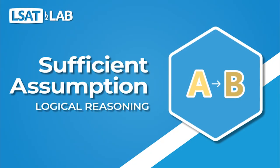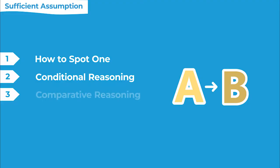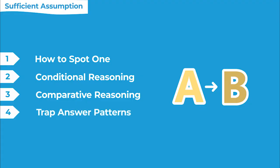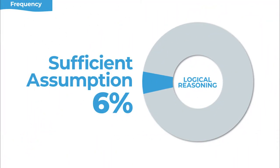Hi, this is Matt at LSAT Lab and today's lesson is on sufficient assumption questions in the logical reasoning section. In this lesson, we look at how to spot a sufficient assumption question, an example question with conditional reasoning, an example with comparative reasoning, and the trap answer patterns you need to know. It's not a very common question type — only 6% of logical reasoning questions — but it's one of the harder types since it relies so heavily on conditional logic.